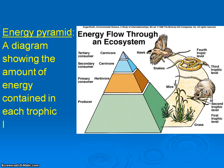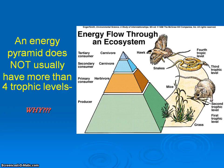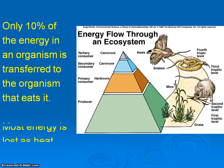A way we can look at that is through energy pyramids. Energy pyramids are good ways to help us identify not only the amount of organisms in each trophic level, but the amount of energy that passes on. The way this works is as you move up an energy pyramid, you've got the producers right at the bottom.